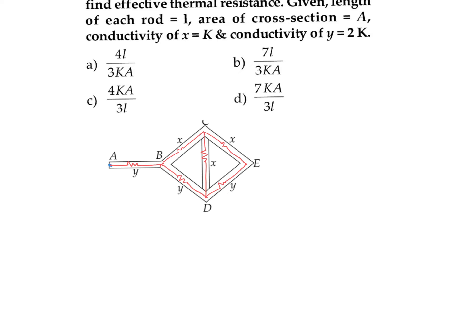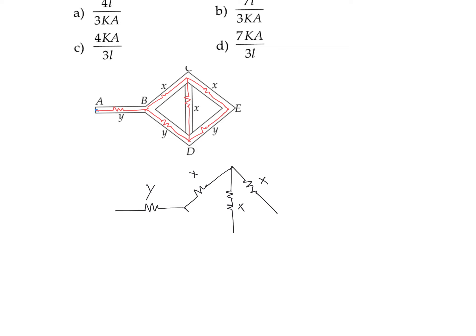Material Y and X have different conductivities, so we assign resistances accordingly. There is a resistor Y, another resistor X, another resistor X, a resistor X in the middle, a resistor Y, and another resistor Y — connected in a network. We need to find the equivalent resistance between point A and point E.